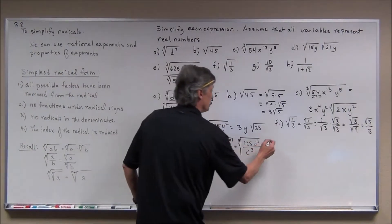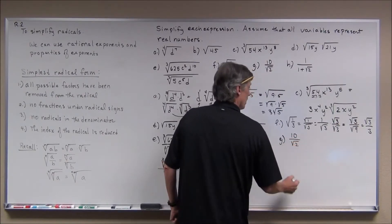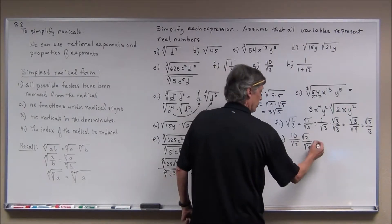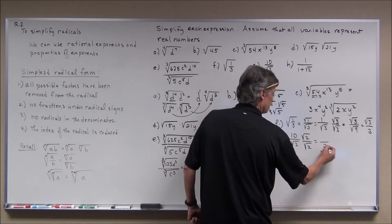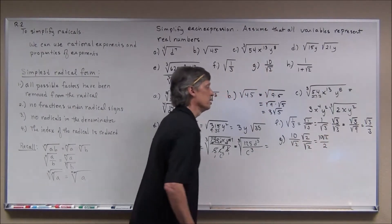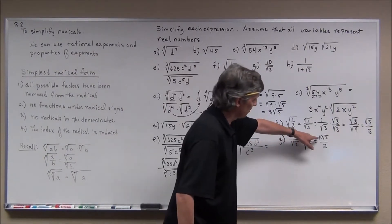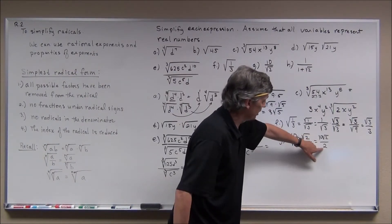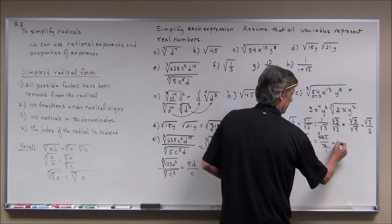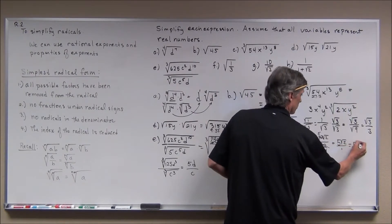Similarly for G, I have 10 over the square root of 2. I multiply top and bottom by the square root of 2. The square root of 2 times the square root of 2 is the square root of 4, which is 2, giving 10 square root of 2 over 2. The radical is simplified, but the fraction simplifies further — 2 goes into 10 five times — so this simplifies to 5 square roots of 2.